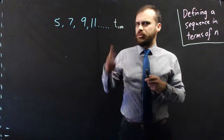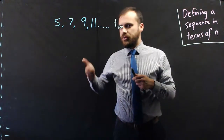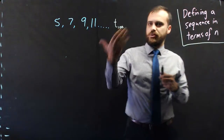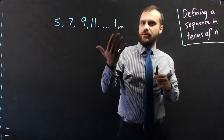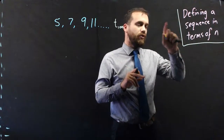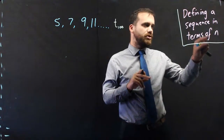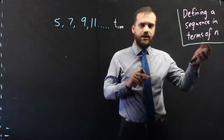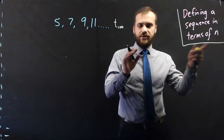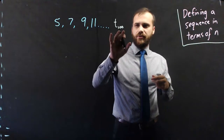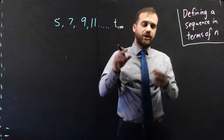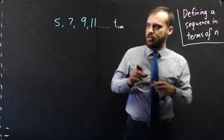And to know what term 99 was, I'd need to know what term 98 was, 97 — I'd need to do 100 calculations before I finally figured out what term 100 was. But if we can come up with a formula that just uses n straight away, I can plug in 100 and find out what the 100th term is.